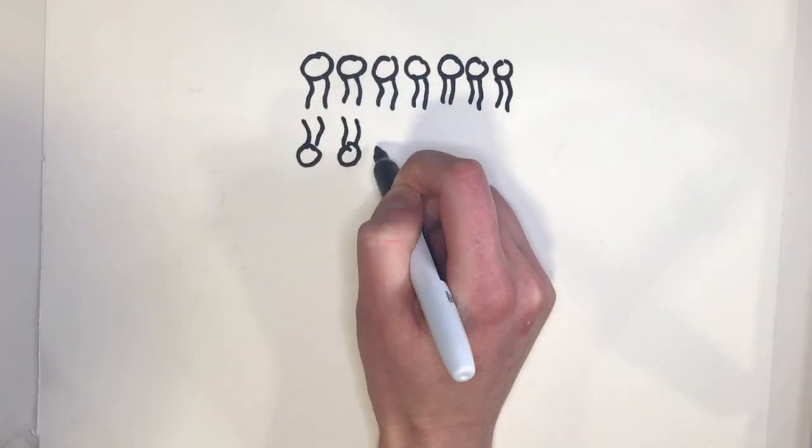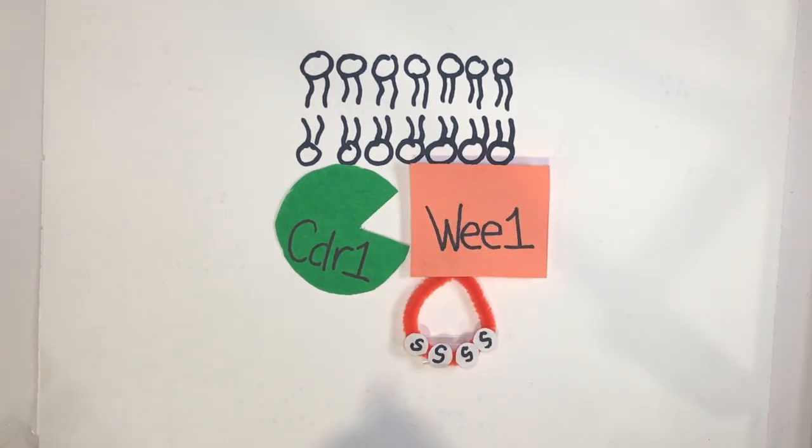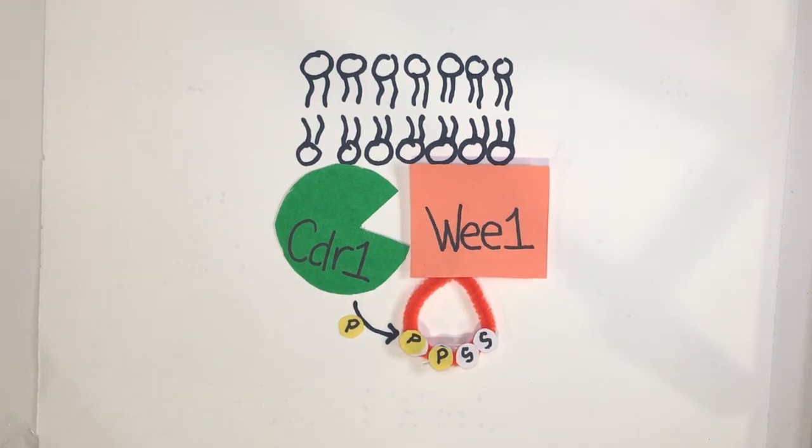Wee1 and CDR1 co-localized to punctate structures at the plasma membrane. We found that at physiological levels of these proteins, localization of these structures is necessary for CDR1 inhibition of Wee1.